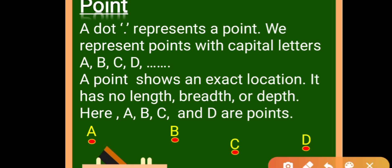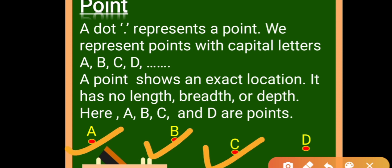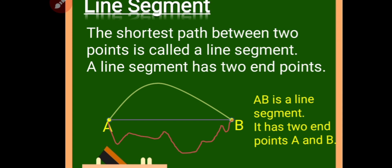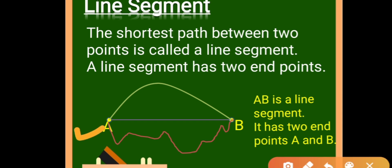For your convenience I have drawn four points over here — point A, point B, point C, and point D. If you name the point, then only you can easily identify the location — that this is point A, this is point B. Now, what's next? Line segment.